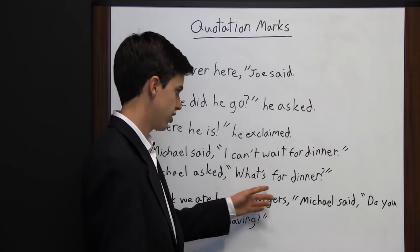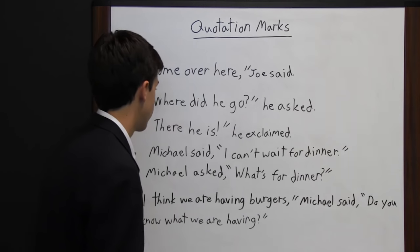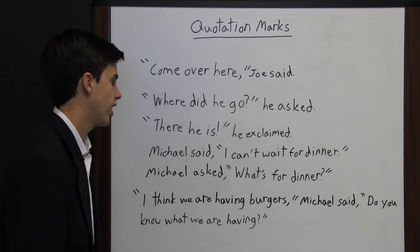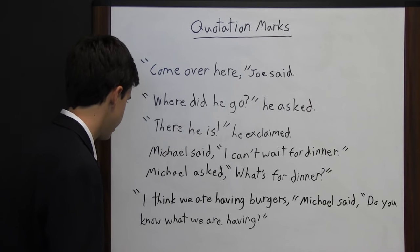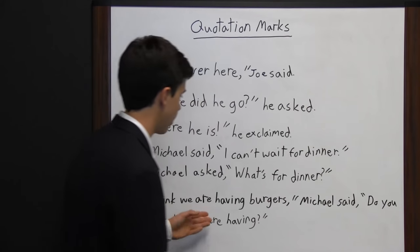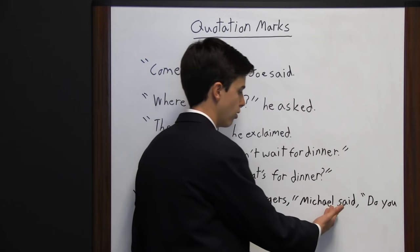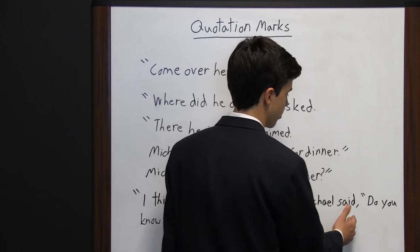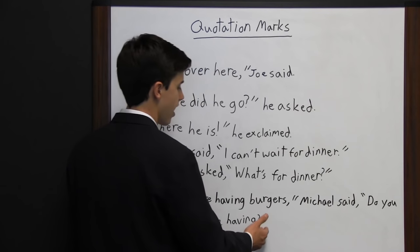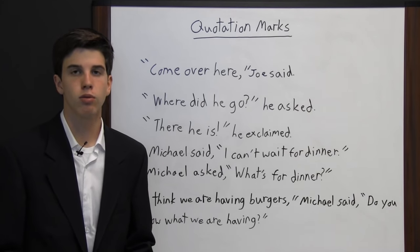For 'Michael asked, what's for dinner?' — it's a question, so use a question mark inside the quotation marks. The final sentence is unique: 'I think we are having burgers,' Michael said, 'do you know what we are having?' Here there are two quotes within one sentence. The first quote — 'I think we are having burgers' — is declarative, so it ends with a comma inside the quotation marks. Then outside the quotes we indicate Michael said it, and the second quote — 'do you know what we are having?' — ends with a question mark inside the closing quotation marks.